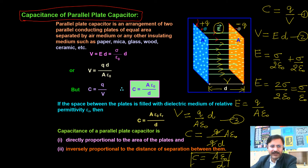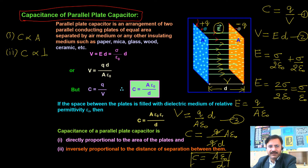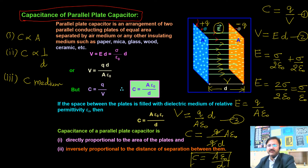In board examinations, a common question is: write the factors on which the capacitance of a parallel plate capacitor depends. First, capacitance depends on the area of each plate. Second, it depends on the distance between the plates. Third, it depends on the medium present between the plates. So there are three factors on which capacitance of a parallel plate capacitor depends.